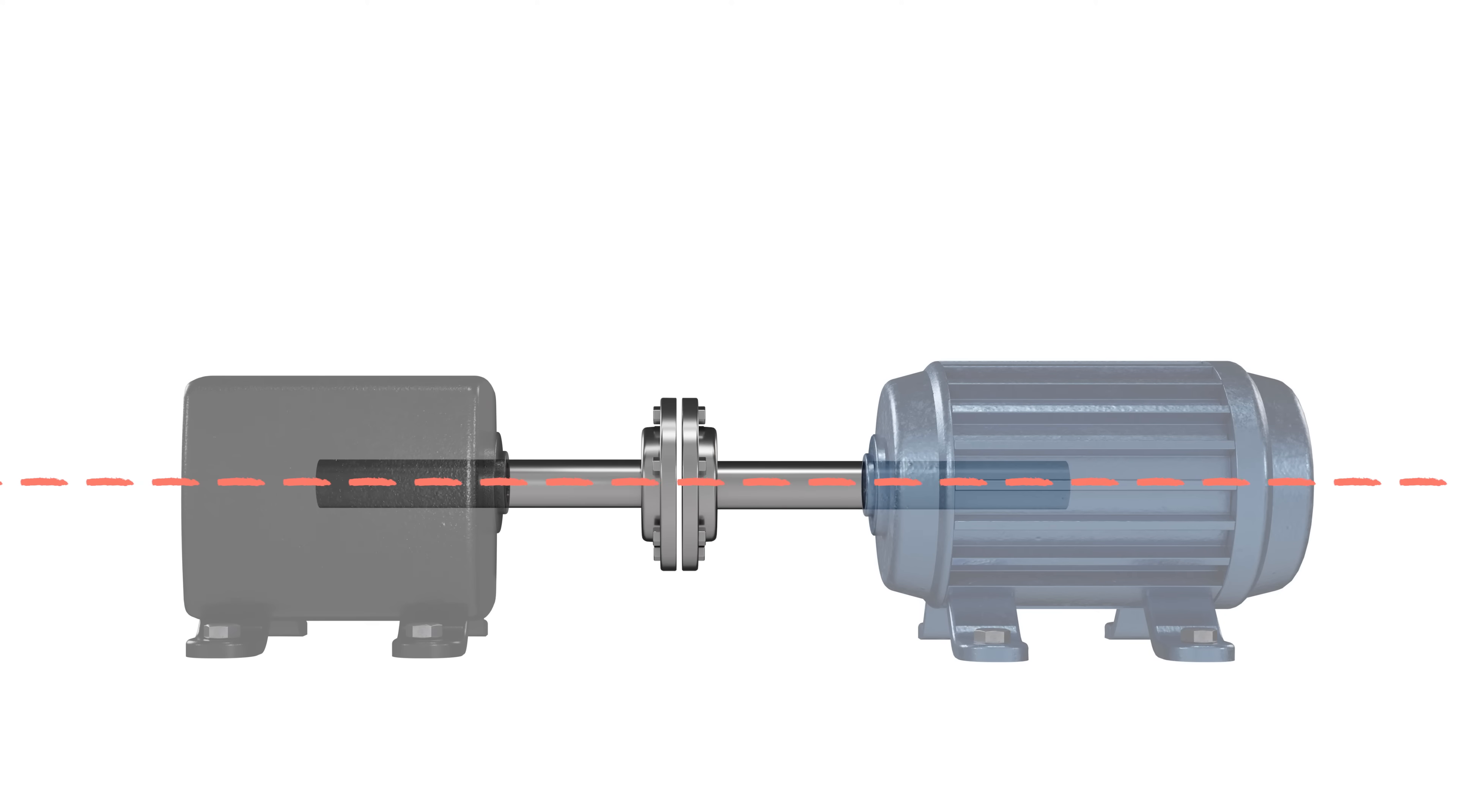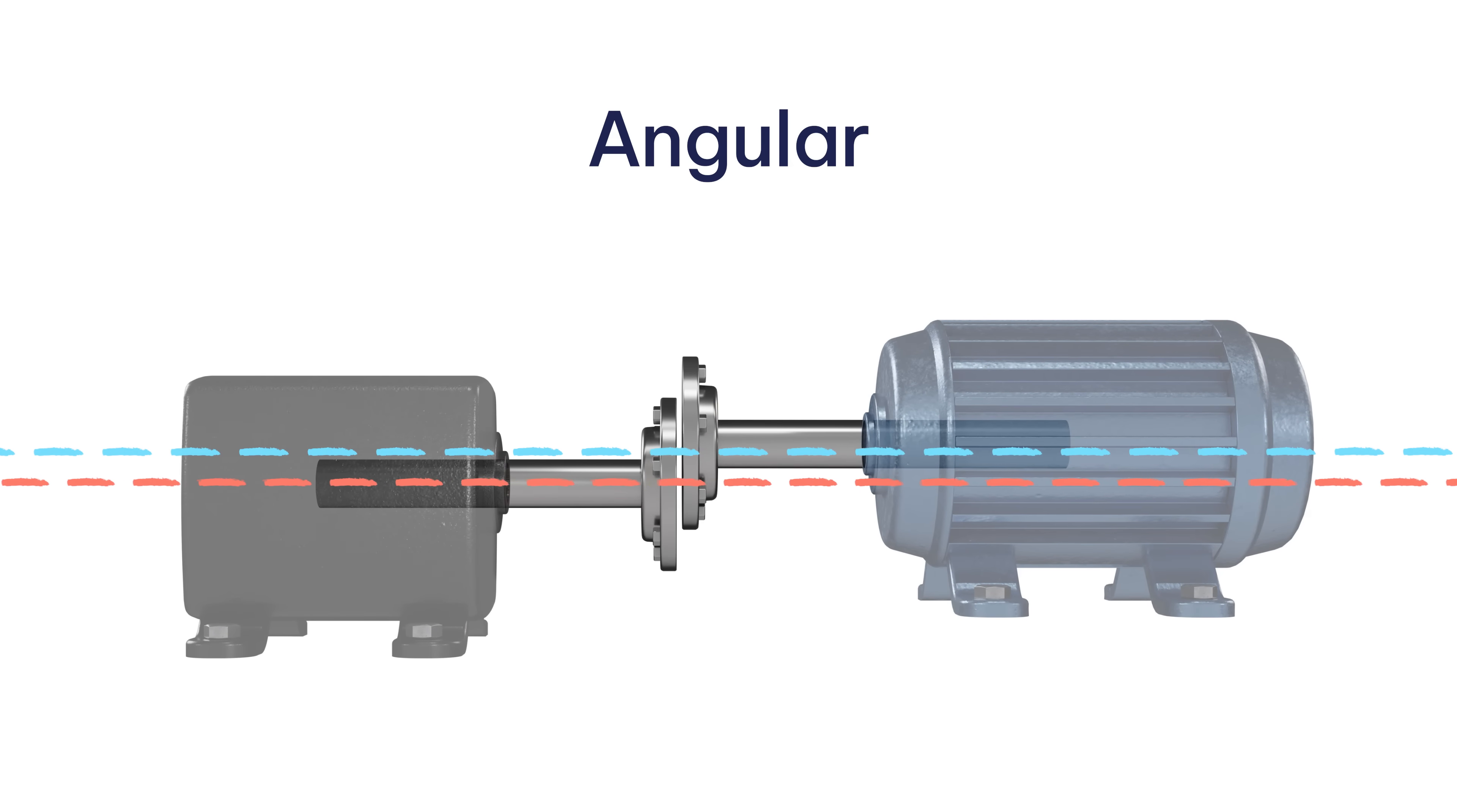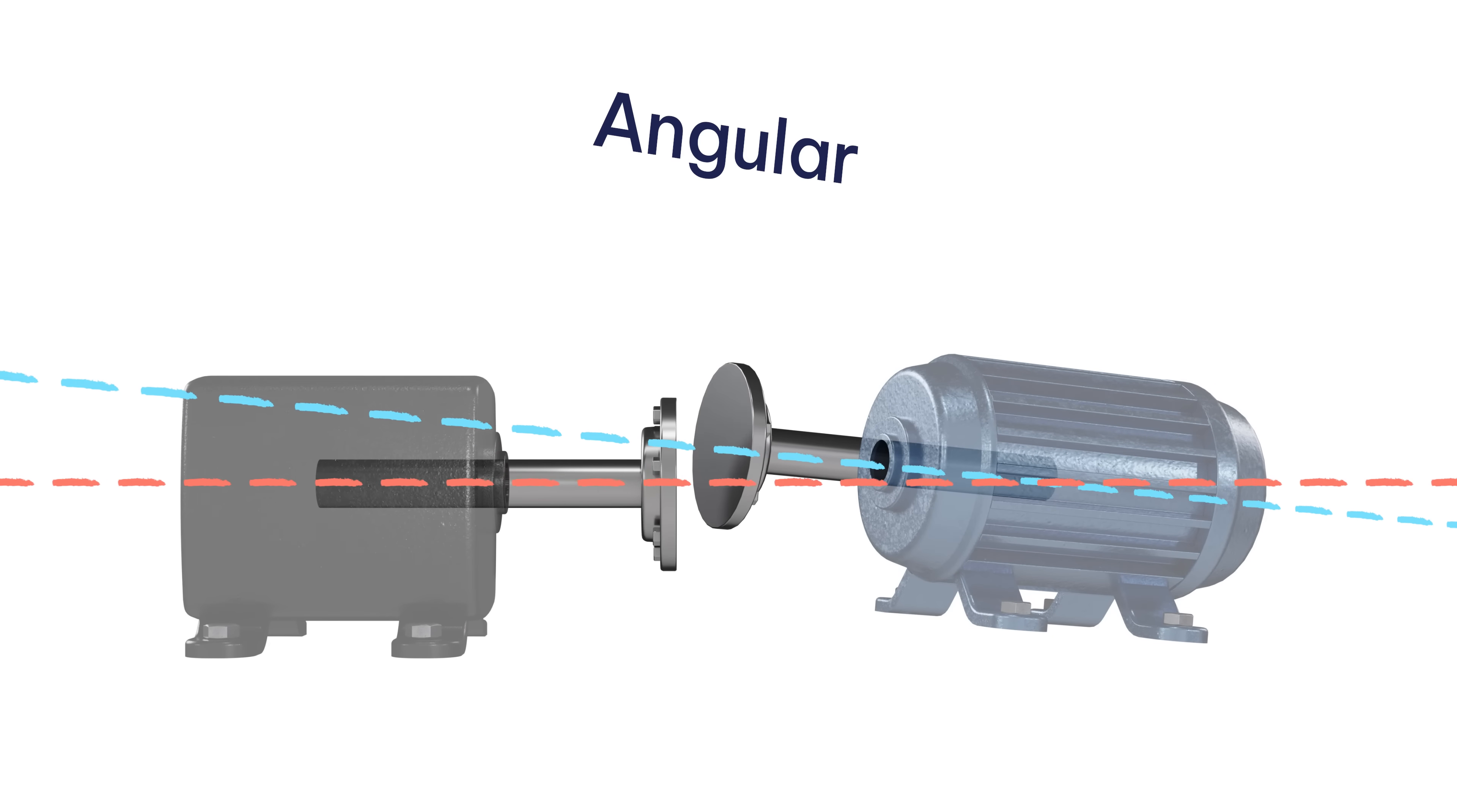Shafts are usually out of alignment, with the misalignment taking two forms: offset misalignment and angular misalignment.